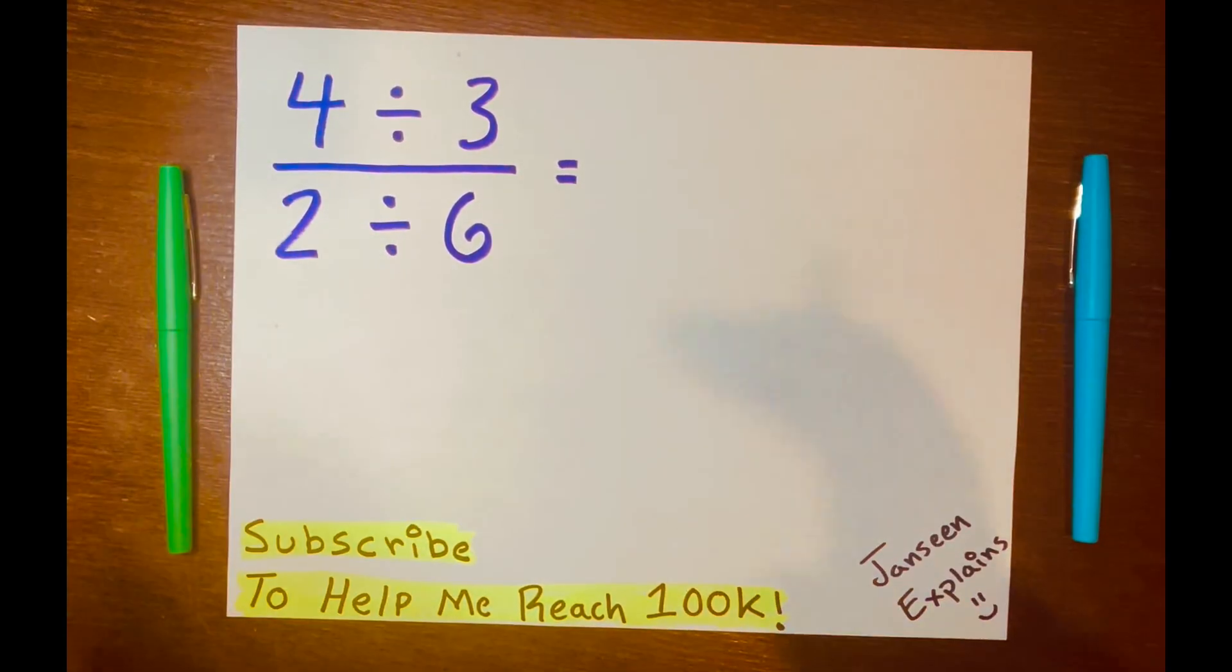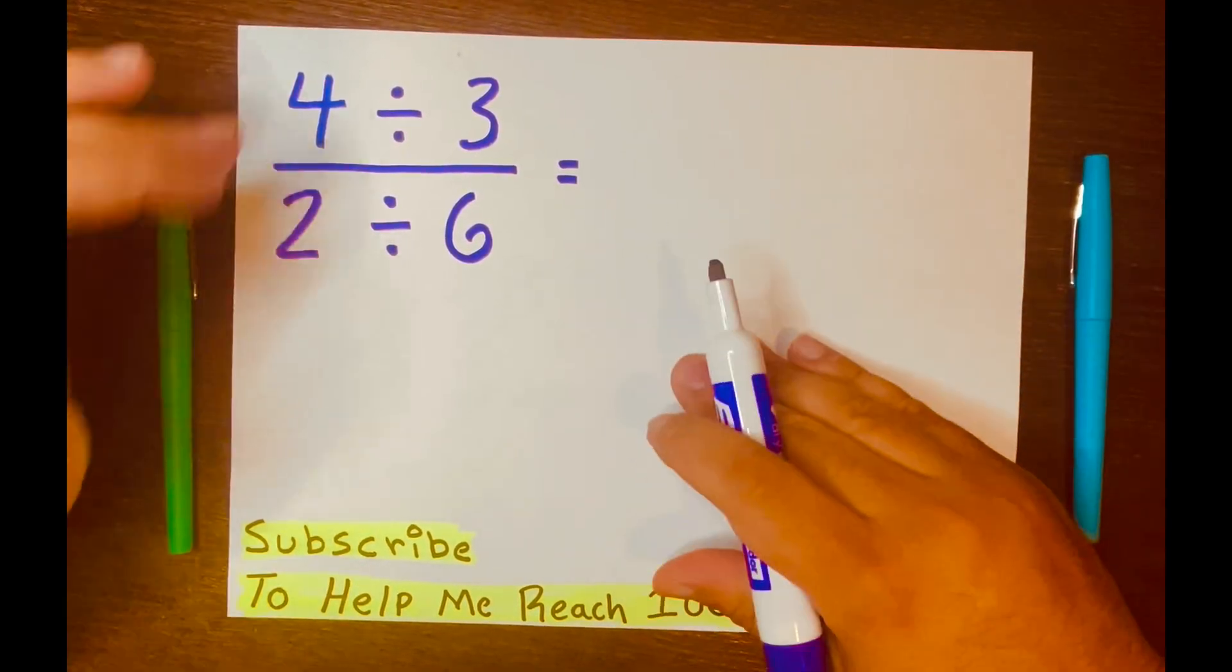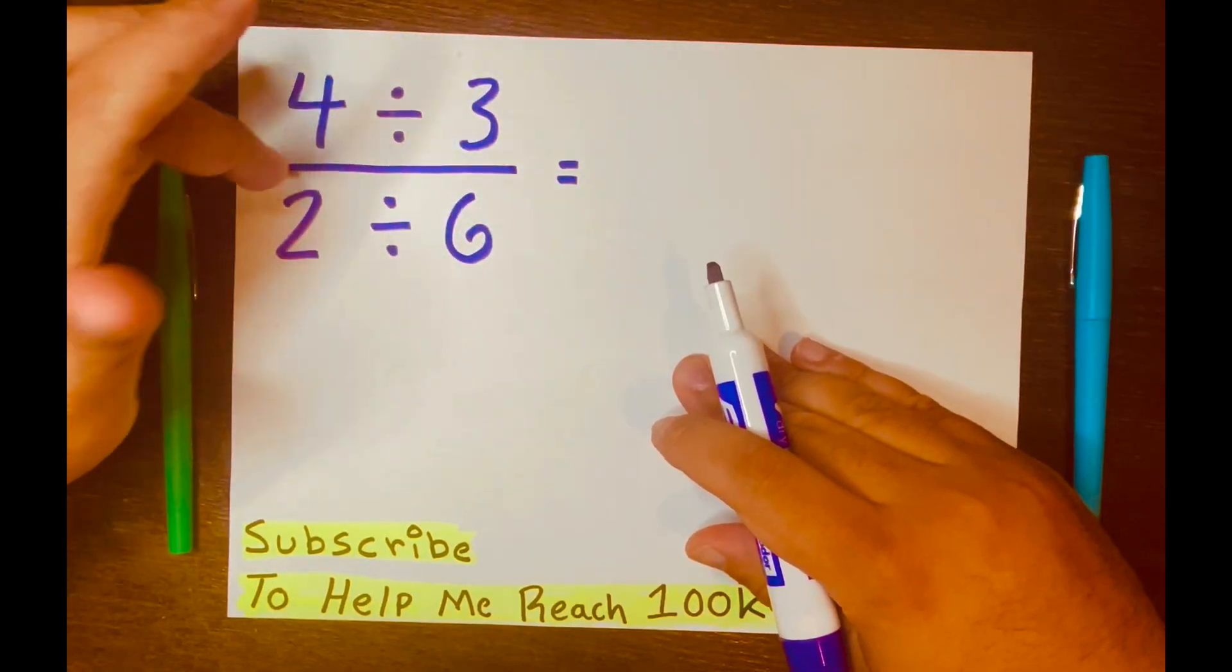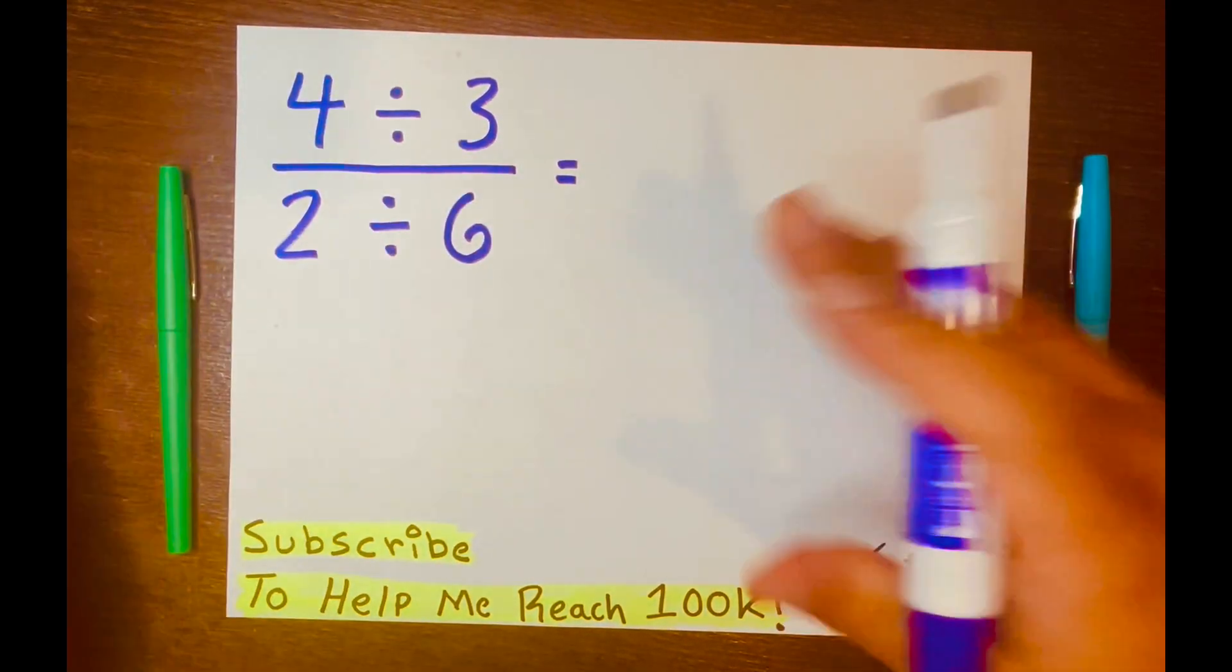Some people, when they see a math problem like this, they'd be like, oh my, how do you solve this math problem? Four divided by three divided by two divided by six. How do you solve this math problem?